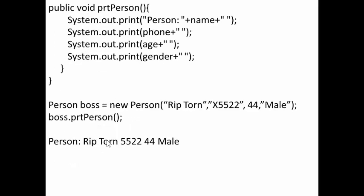Here's another method called printPerson. And what it does is it uses the system print to print a series of items. First a constant text person, and then the name, the phone, the age, and the gender.